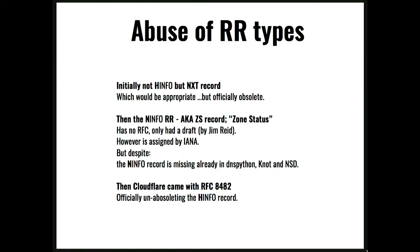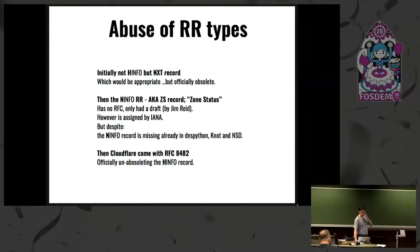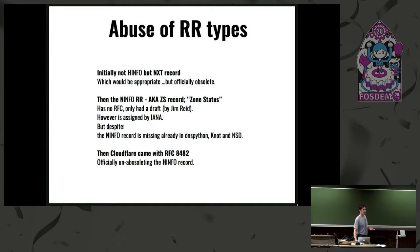I did a bit of abuse of RR types in the beginning to get these results. Initially I wanted to use the NXT record — which is obsolete. Then I tried the zone status record, which is assigned by ICANN, but it only had a draft and therefore is not supported in dnspython, NSD, or others. While I was experimenting, Cloudflare made the INFO record un-obsoleted — and that's the record I ended up using.